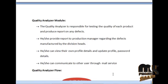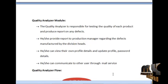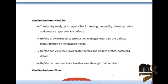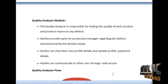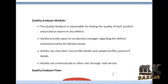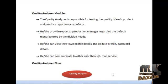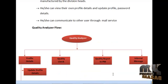The next module is the Quality Analyzer module. The Quality Analyzer is responsible for assessing the quality of each product and producing reports on any defects to the Production Manager. They provide reports regarding defects identified in products manufactured by the Division Head. They can view and update their own profile details and change password routinely for security reasons, and communicate with other users through mail services. The Quality Analyzer data flow diagram is shown below.